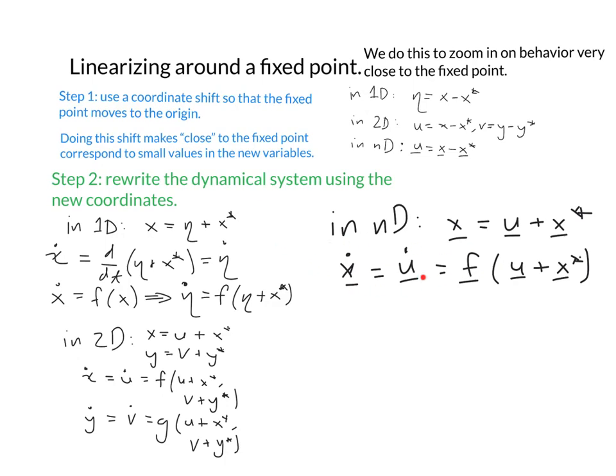I can also do this in n dimensions. There, ẋ will be u̇, and it will be, instead of f vector of x vector, it will be f vector of u + x*.